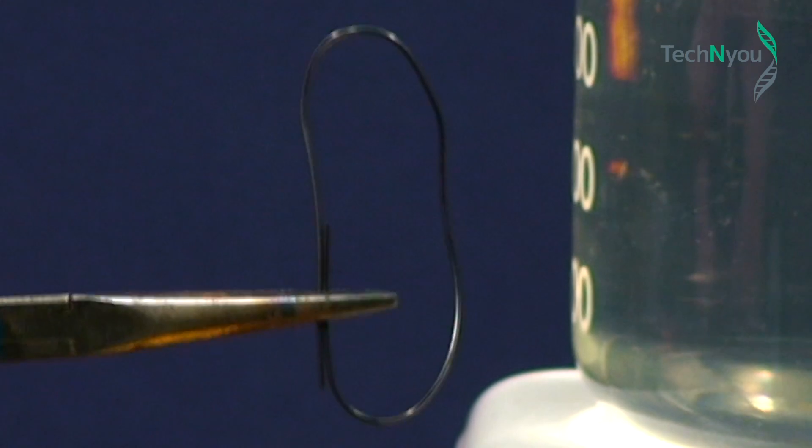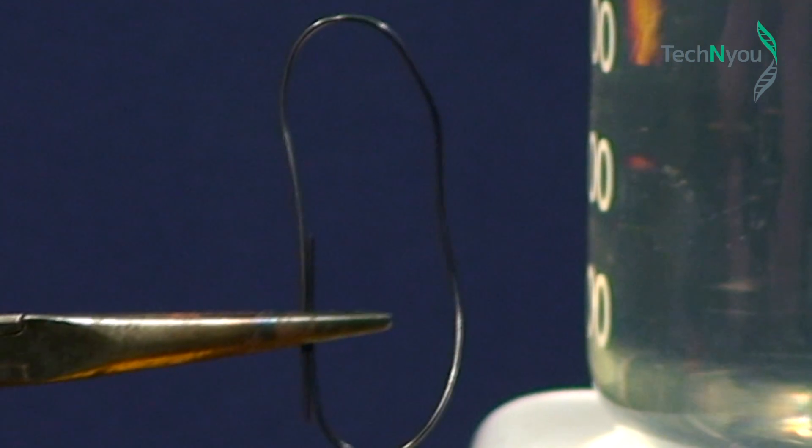This time, we bend the Nitinol wire into another shape, say, roughly a loop. Then we place the wire loop in the Bunsen burner flame.